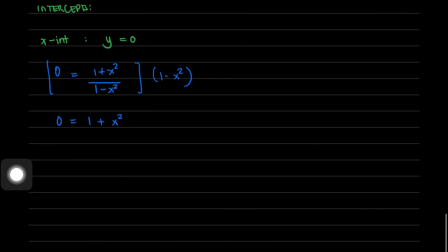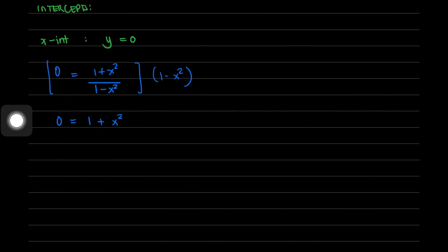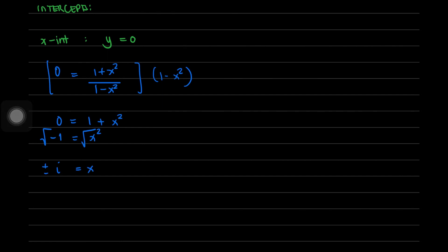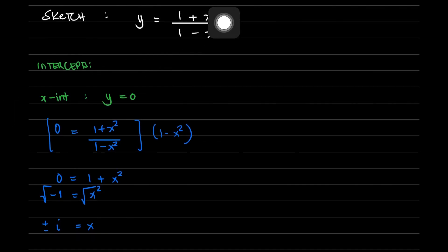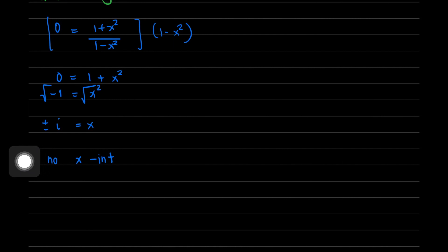Transposing, we get negative 1 = x². Taking the square root of negative 1 gives us a positive and negative imaginary number. Therefore, there is no x-intercept in this function, meaning the graph will not pass across the x-axis.